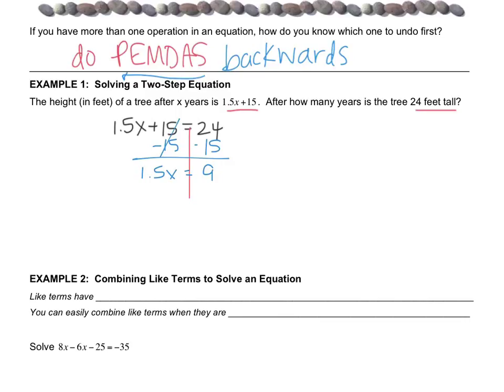I still have an operation to remove. What operation is this? A number next to a letter means multiplication. So I'm going to remove it by dividing by 1.5 because the opposite of multiplication is division. And I want to get my calculator out. So here we go, 9 divided by 1.5 is 6. So the answer to the question, after how many years is the tree 24 feet tall? The answer is 6 years.